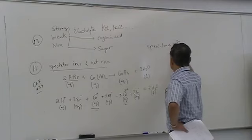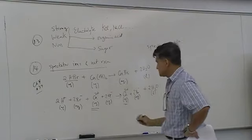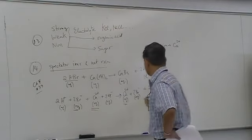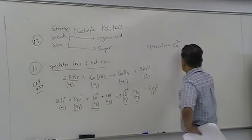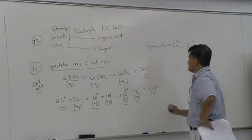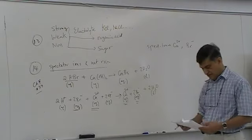Is calcium 2 plus. Let's see whether there is anything else. 2 Br minus is also a spectator ion, Br minus. So these are spectator ions I have in this case.